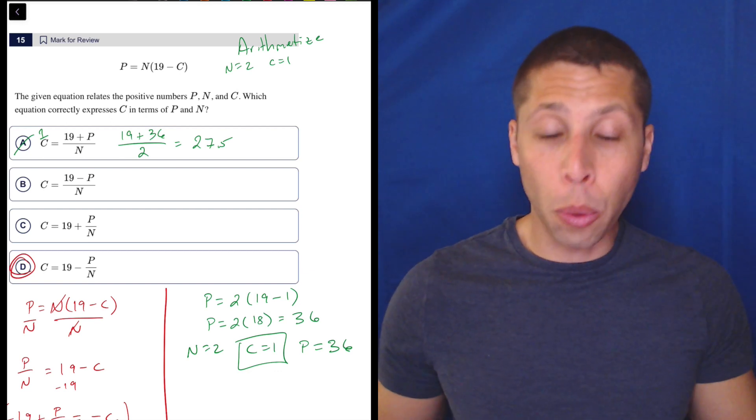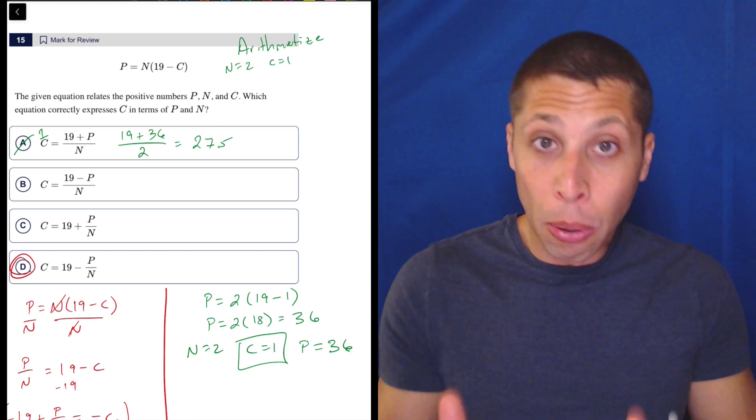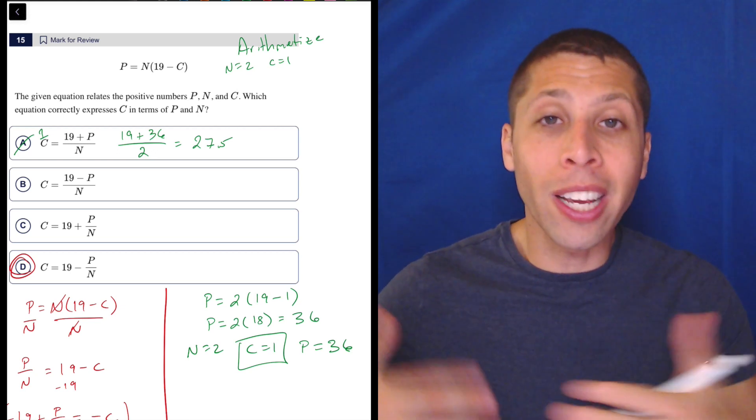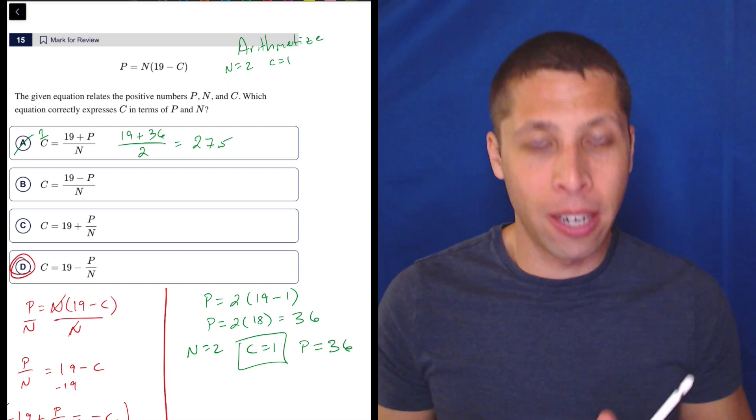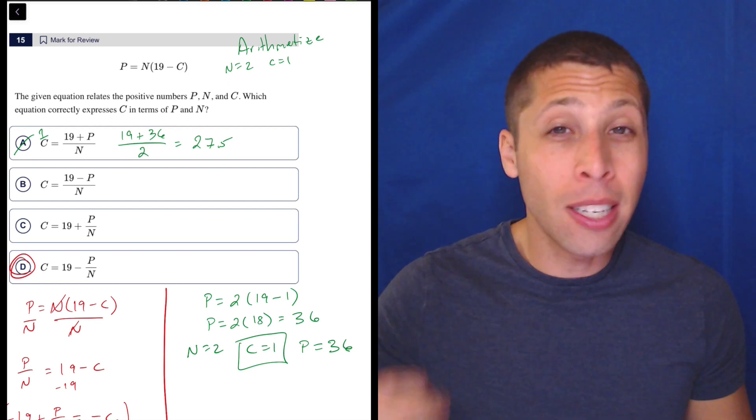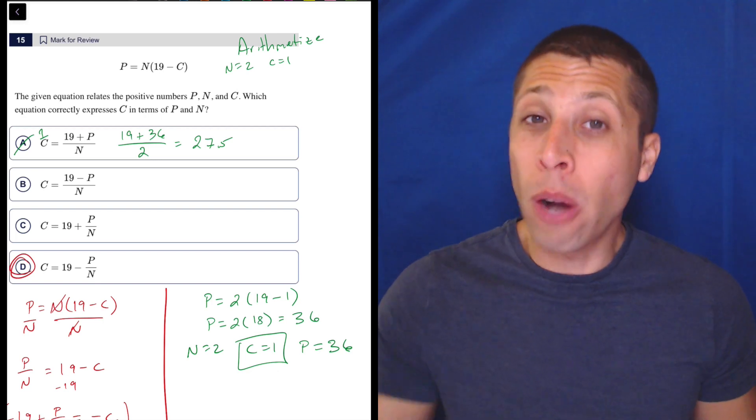So that's how we know with arithmetize that this is wrong. Because if they're supposed to be equivalent equations, when we put the same numbers into equivalent equations, we should get equivalent numbers out. We should get the same results. But that's not happening here. We're being told now that C is 27.5 when we know C is supposed to be one.